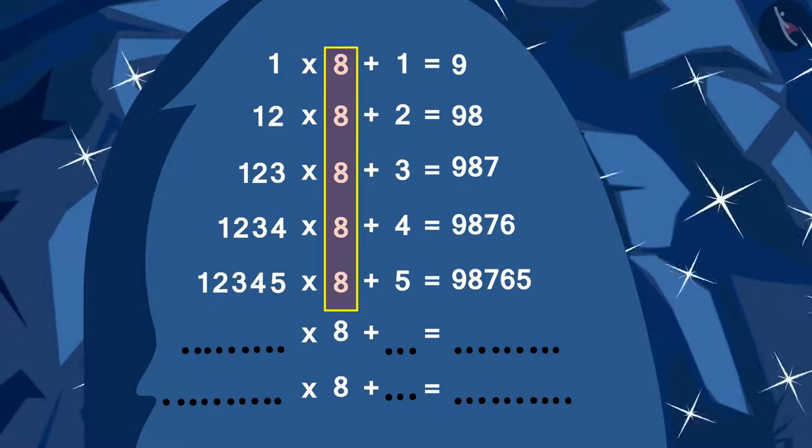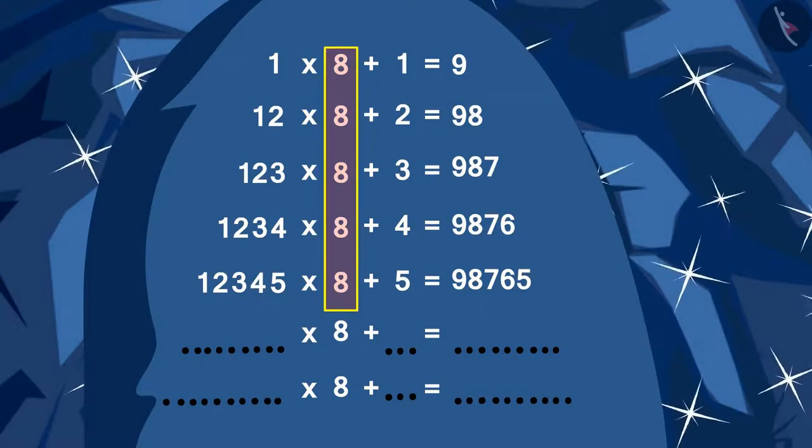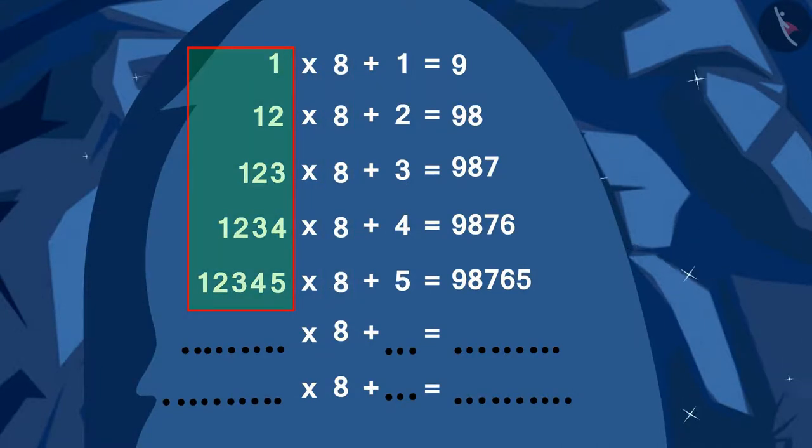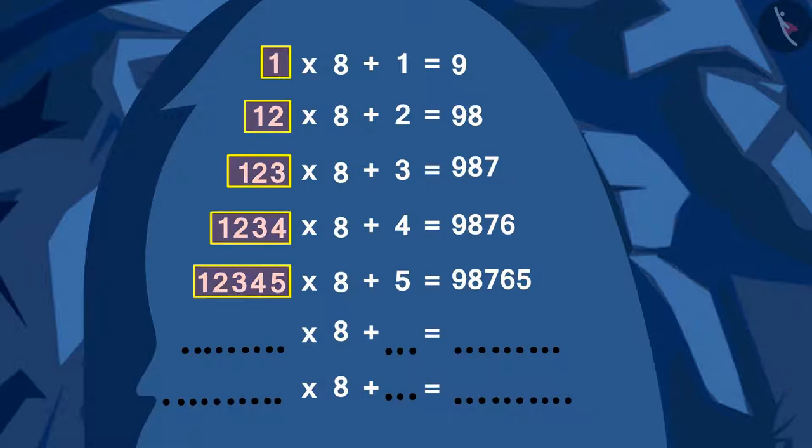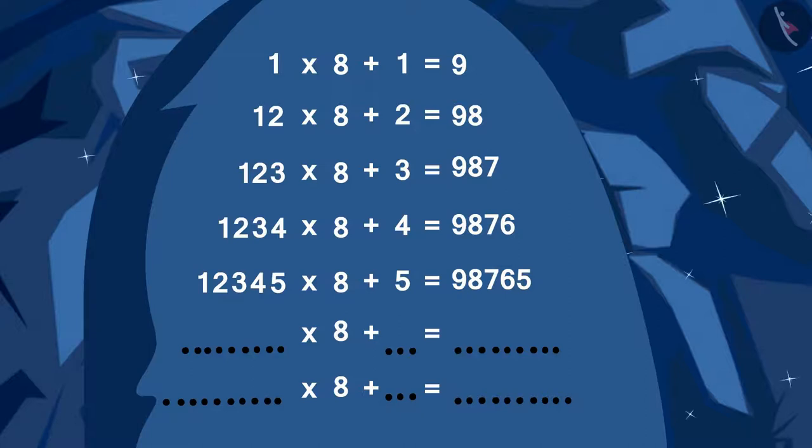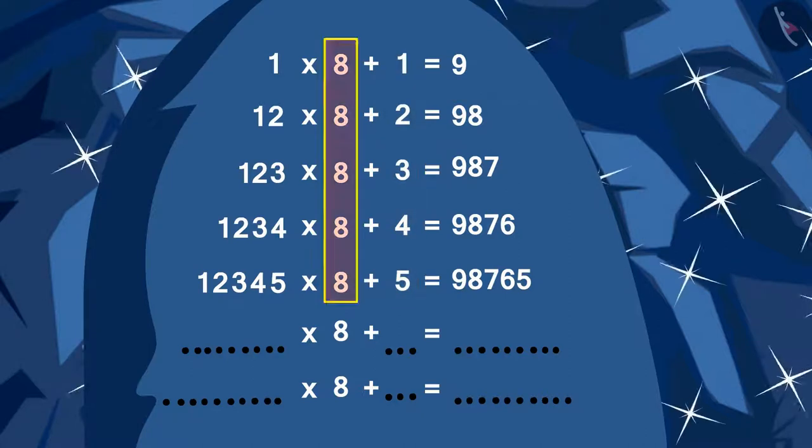Every time the number being multiplied by 8 is written as increasing number of digits. It is also the number being added after multiplication.